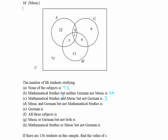The next one is Music and German but not Mathematical Studies. Music and German gives us 6, because this is the only region for those people, and we don't want anyone who is also studying Mathematical Studies. Remember the word 'and' means intersection, so the intersection of Music and German is 6.